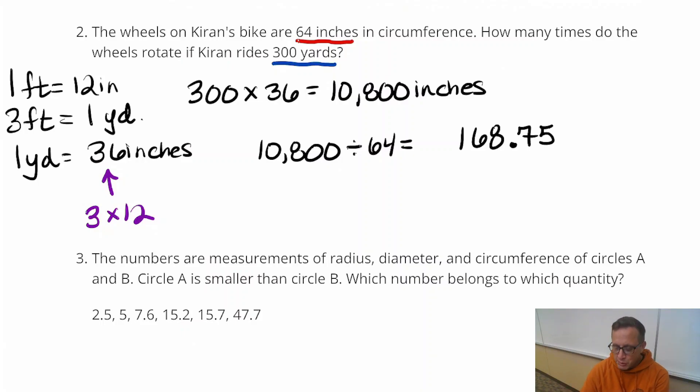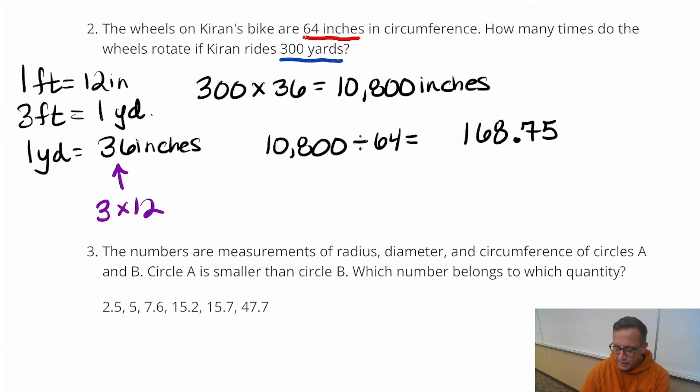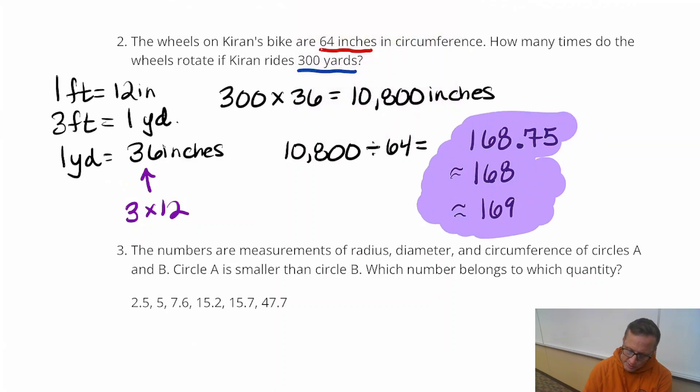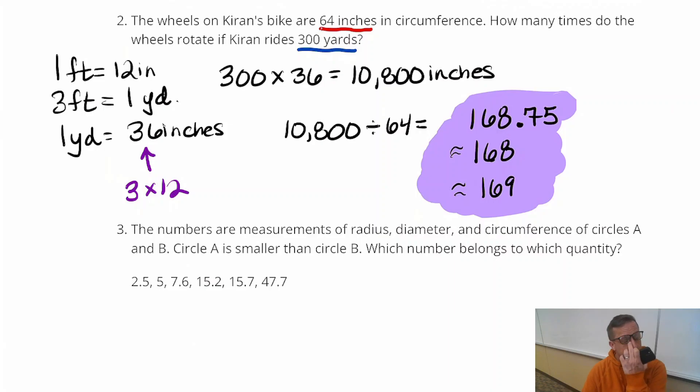If it's asking how many complete rotations, we might just need to truncate it and just say it's 168. If it said around how many, how many rotations, then we might just be able to round it up to 169. We could say it went around about 169 times. Not exactly, but if you're using the word approximately, you can get away with that. So all those answers right there I would say would be acceptable. This problem doesn't really tell you what kind of answer it wants you to put.